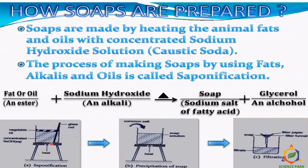In a utensil, you take an aqueous solution of sodium hydroxide (caustic soda) and add vegetable oil into it. You stir the solution with a glass rod and start heating it. At a particular temperature, soap is formed and glycerol is formed as a by-product. The third step is filtration — on the filter paper you get soap, and the filtrate is alcohol or glycerol.